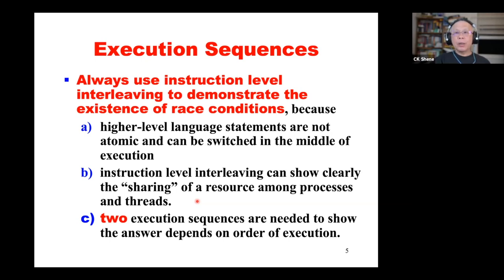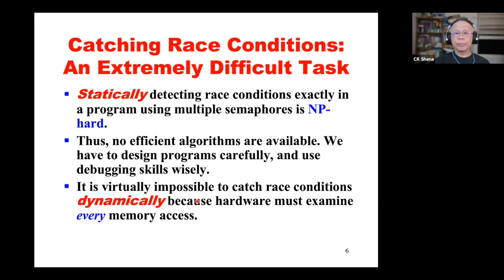To illustrate that we have two different results, we use one execution sequence to show that under one order we have one result. Then we slightly change the order of execution to get a different result. This is an extremely important concept: two execution sequences are needed to show that the answer depends on the order of execution.